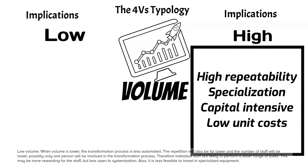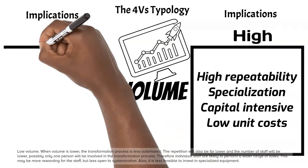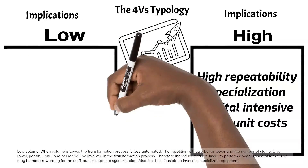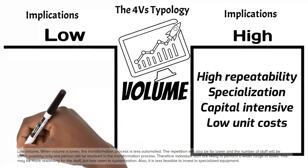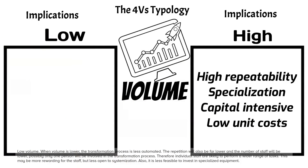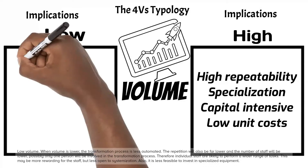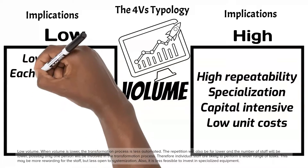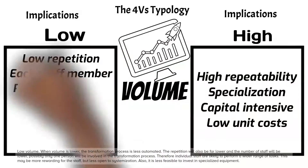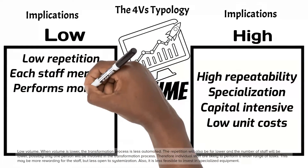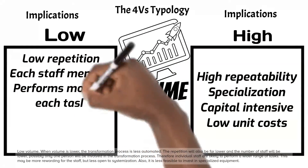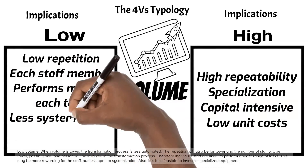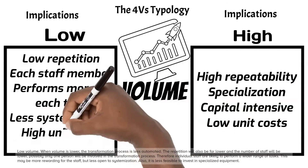Low volume: when volume is lower, the transformation process is less automated. The repetition will also be far lower and the number of staff will be lower — possibly only one person will be involved in the transformation process. Therefore, individual staff are likely to perform a wider range of tasks. This may be more rewarding for the staff, but less open to systemization. Also, it is less feasible to invest in specialized equipment.